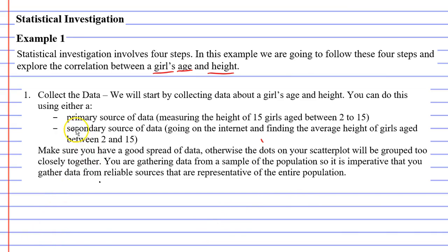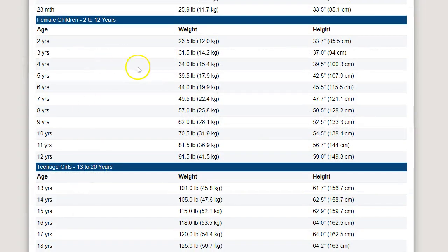All right, so I'm going to do a secondary source of data, and I've found a website that has the age of girls, so from 2 to 15 years old, and it also has a list of their average heights. Now, I want to point out that this is the data I'm using. I want you to use your own data, whether you use a primary source. If you're using a secondary source, I would prefer that you use a different website.